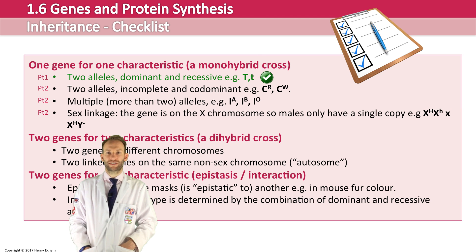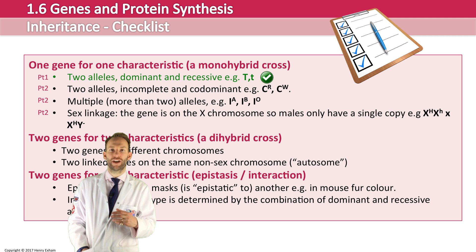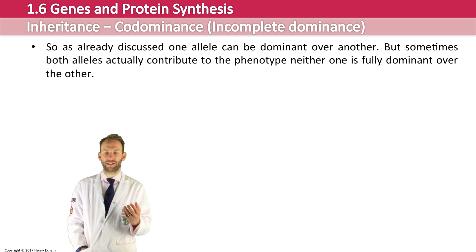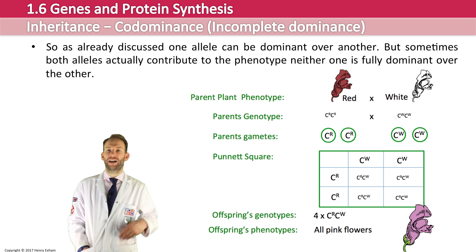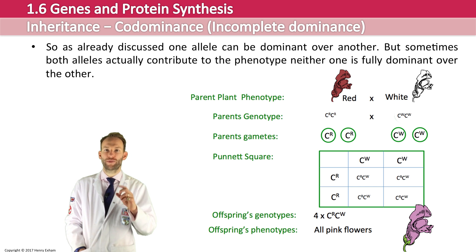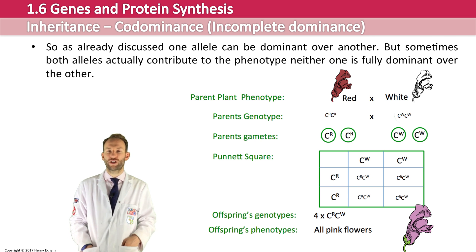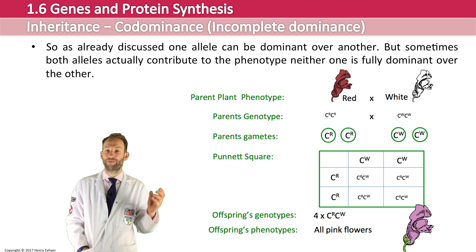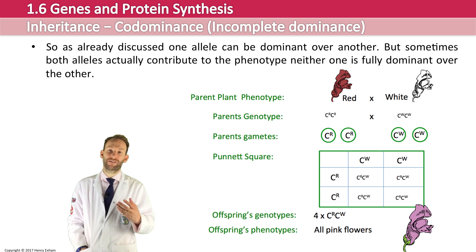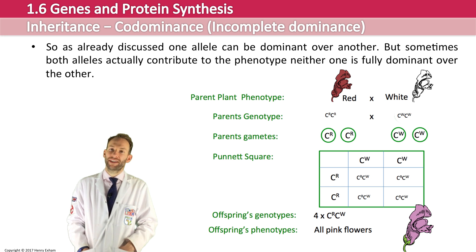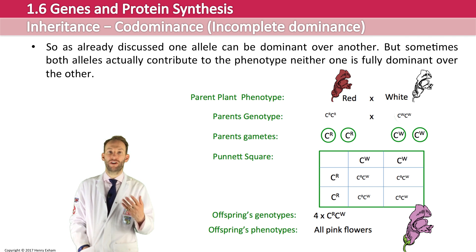Now let's look at something called co-dominance. This is where one allele isn't necessarily dominant over another one, but they both contribute to the actual phenotype in the end. A nice example here is snapdragon flowers — you've got a red and a white. With co-dominance we show the alleles as superscript. We choose a different letter for the characteristic, so in this case colour, and then we show the variations in superscript. When you get heterozygous individuals, they get a bit of both parents and end up with pink flowers. This is technically called incomplete dominance — it's an example of co-dominance.